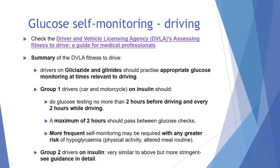The DVLA Fitness to Drive has specific guidance for people with type 2 diabetes. In summary, drivers on glinides should practise appropriate glucose monitoring at times relevant to driving. Group 1 drivers — cars and motorcycles — on insulin should do glucose testing no more than 2 hours before the start of the first journey and every 2 hours after driving has started, with a maximum 2-hour gap between the pre-driving glucose test and the first check after driving. More frequent monitoring may be required if there is a greater risk of hypoglycaemia, such as physical activity or altered meal routine.